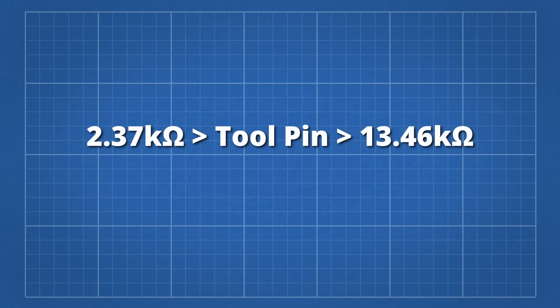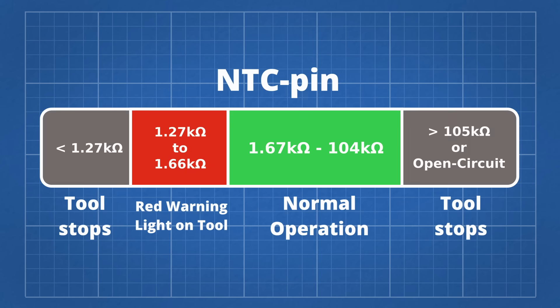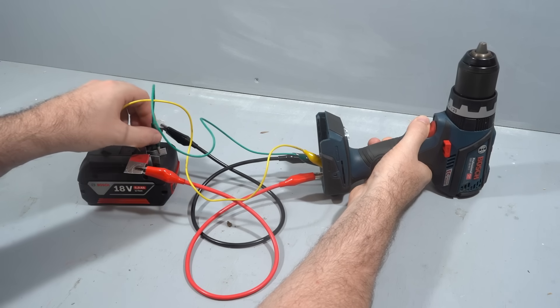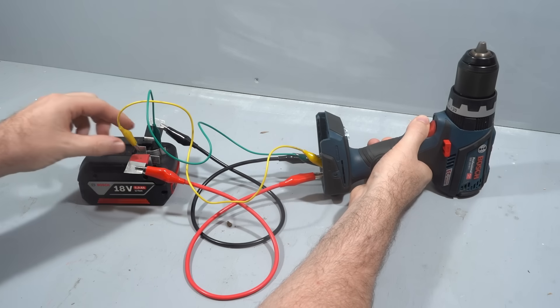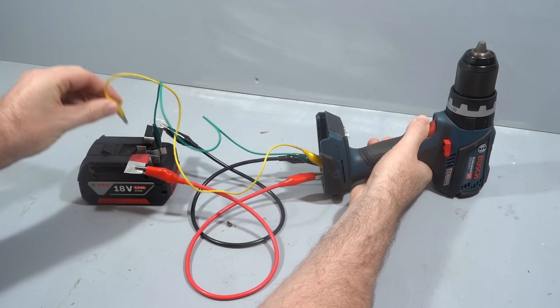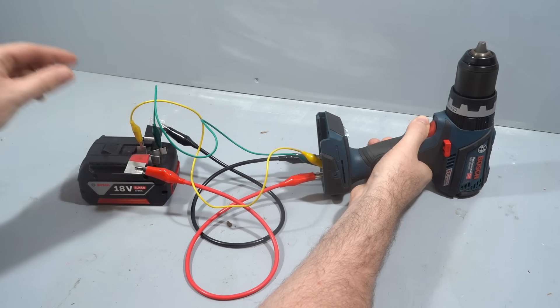The acceptable range for the tool pin is between 2.37 and 13.46 kilohms. The NTC pin is in normal operation between 1.67 and 104 kilohms. Below 1.66 kilohms and the tool will show a red warning light. Below 1.27 kilohms and the tool will stop. If the NTC is disconnected while running, the tool will stop. The tool pin however can be disconnected after the tool has started and the tool will keep running.